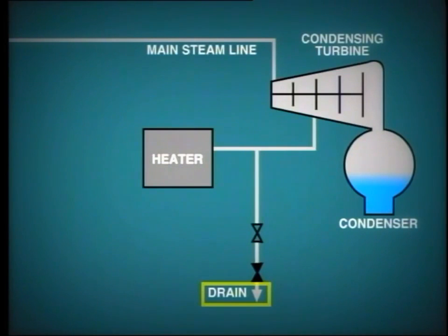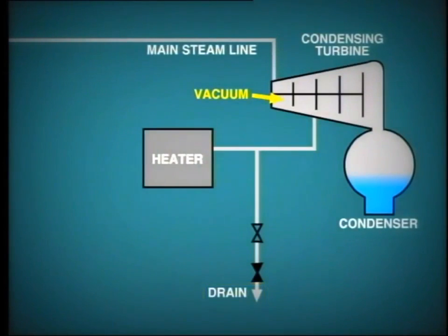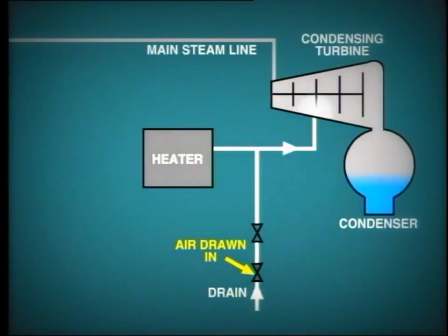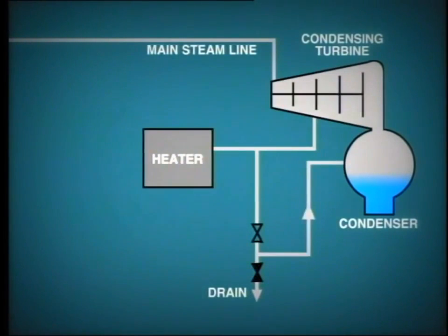But where can these extraction lines drain to? Well, remember during start-up all of the turbine and extraction pipework is under vacuum conditions. So it is obvious that the drains cannot be opened to atmosphere, otherwise we would be drawing air in instead of blowing condensate out. Instead, these drains are discharged to the shell side of the condenser, which of course is also under vacuum.